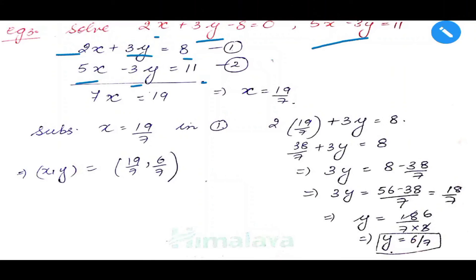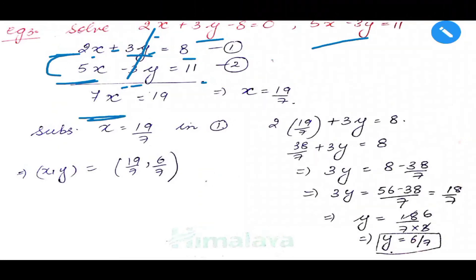Checking coefficients: for x, we have 2 and 5 — not the same. For y, we have 3 and minus 3 — same magnitude and opposite signs. We are done here. Adding the equations: 3y and minus 3y cancel. 2x plus 5x gives 7x, and 8 plus 11 equals 19. So x equals 19 by 7.